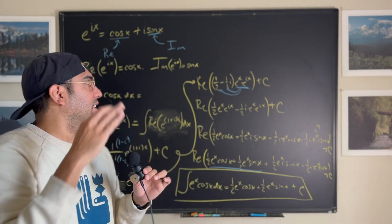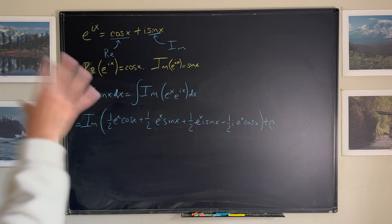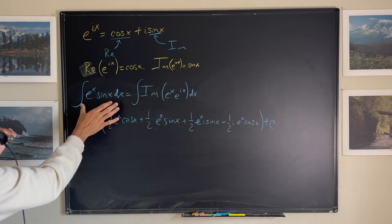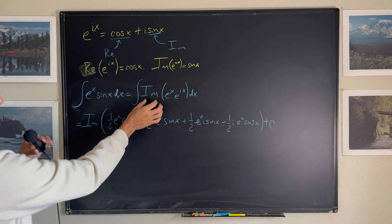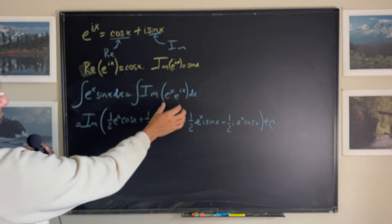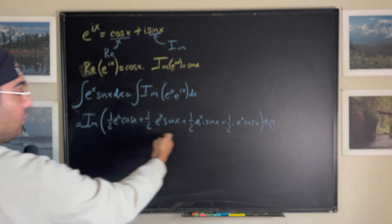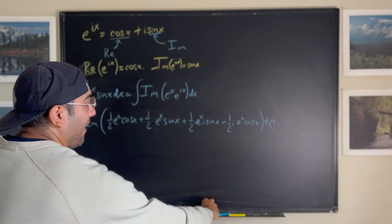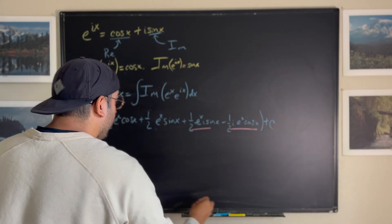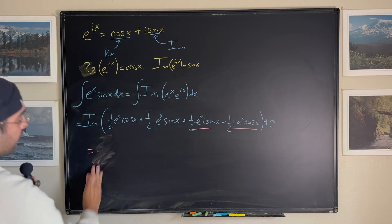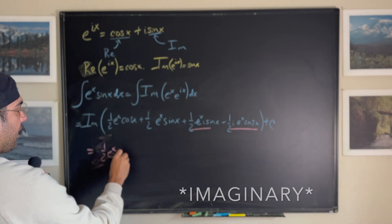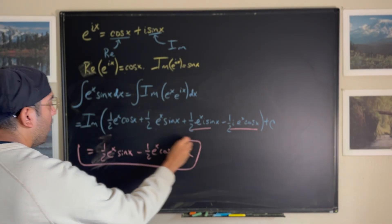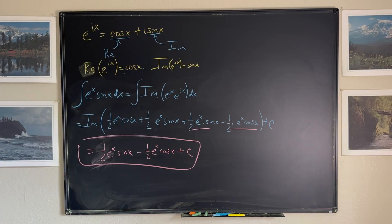Now let's solve the integral of e to the x sine x. We know that the imaginary part of e to the ix gives us sine x. So to solve the integral of e to the x sine x, we call for the imaginary part of e to the x times e to the ix. We already solved that integral — instead of calling for the real part, we call for the imaginary part. So the solution is one half e to the x sine x minus one half e to the x cosine x, plus C. We have solved the integral of e to the x sine x using Euler's formula.